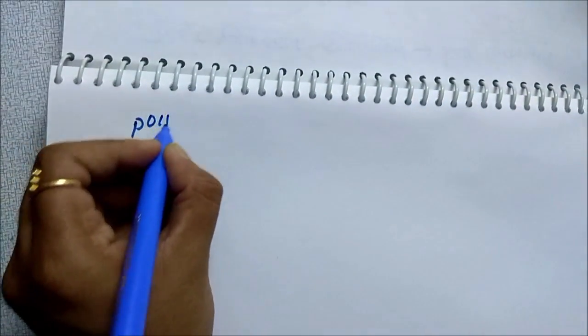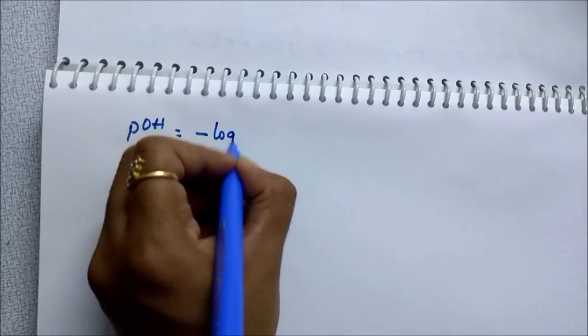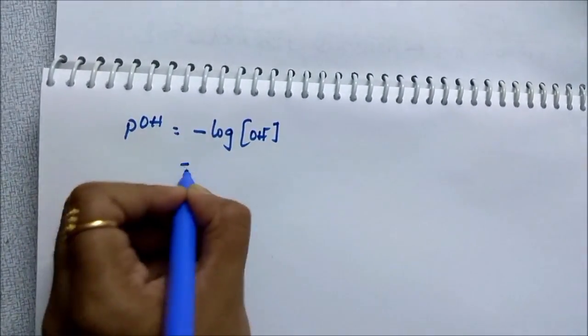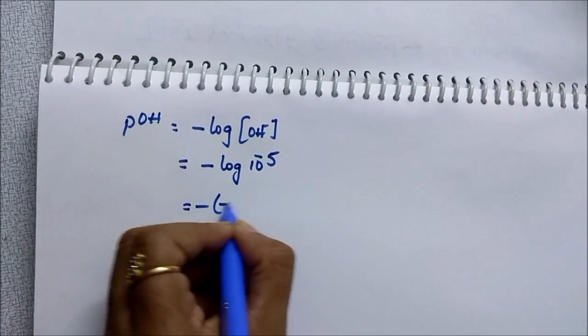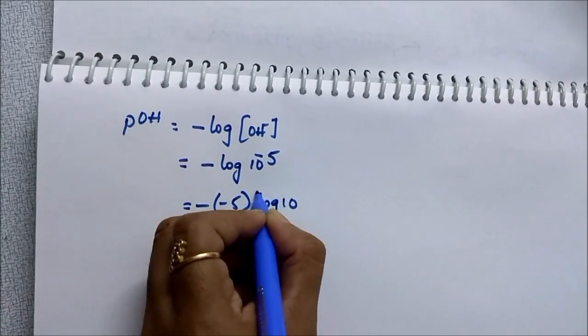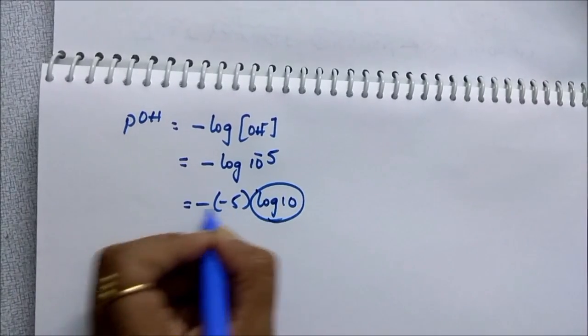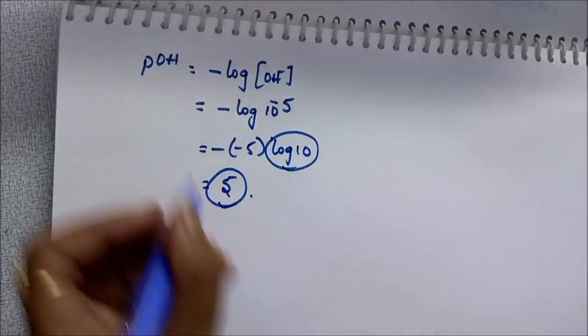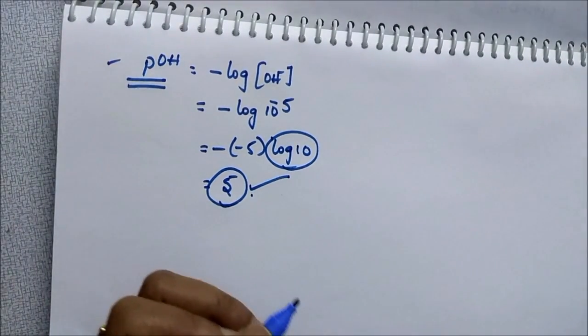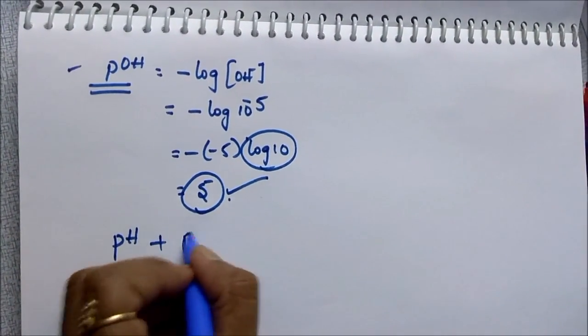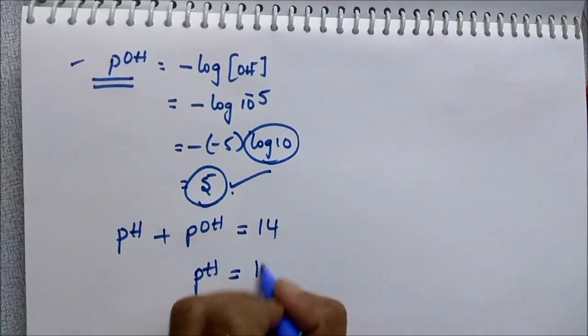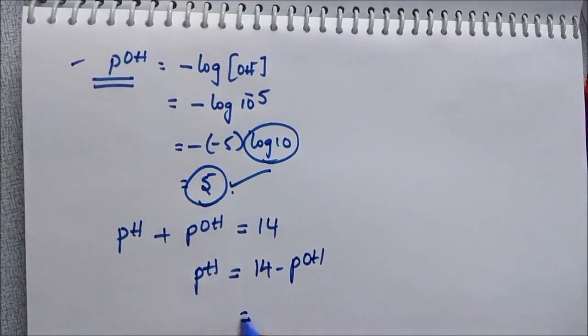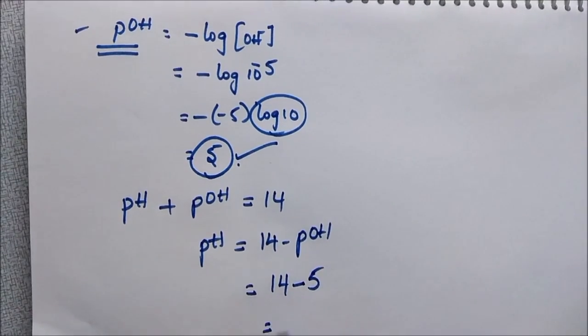Once you know OH minus concentration, what you have to do? pOH is equal to minus log of OH minus concentration, that is minus log of 10 power of minus 5. If it comes from minus of minus 5 log 10, then log 10 will be 1, then minus of minus 5 is 5. Don't be in a hurry and don't put 5 as your answer. Calculate pH plus pOH equals 14.